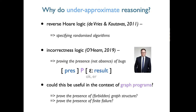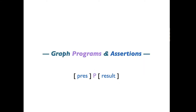That was the background that motivated me to look into this. Before showing the incorrectness logic we developed for graph programs, I need to talk a little about programs and assertions, because here we're working at a different level of abstraction. Our programs are based on graph transformation rules, and our assertions should specify properties of our states, which are graphs rather than a variable store.